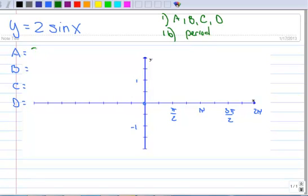So a is 2, b is 1, c is 0, and d is 0. And then our new period we derive from b. The new period is going to be equal to 2 pi over b, and b is 1, so that's going to be 2 pi. So there's no change there.